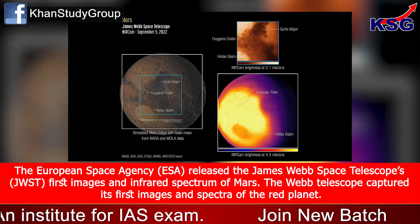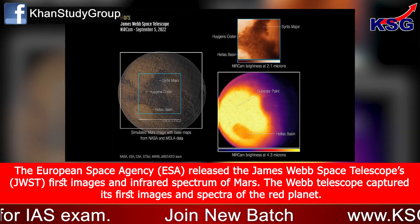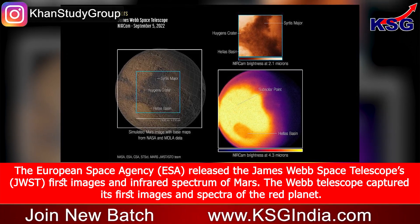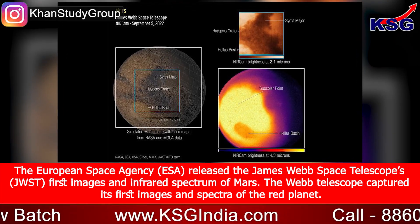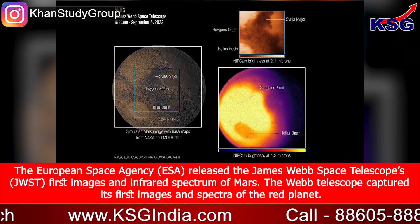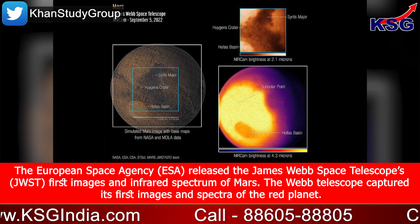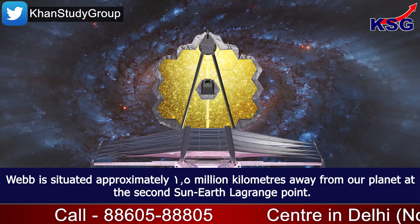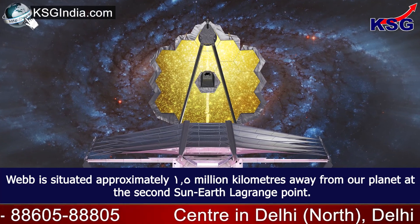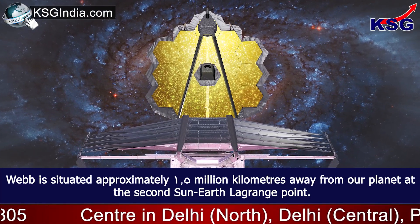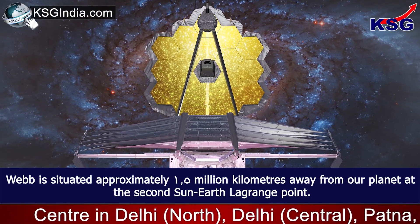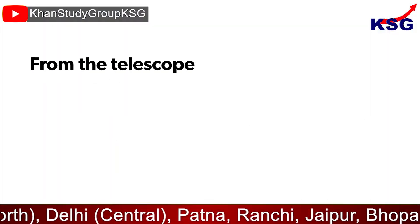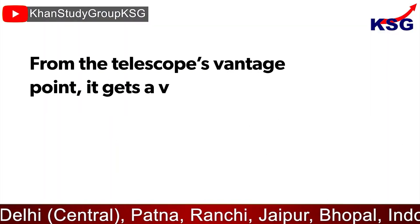The European Space Agency, ESA, released the James Webb Space Telescope's — JWST — first images and infrared spectrum of Mars. The Webb telescope captured its first images and spectra of the red planet. Webb is situated approximately 1.5 million kilometers away from our planet at the second Sun-Earth Lagrange point, L2.